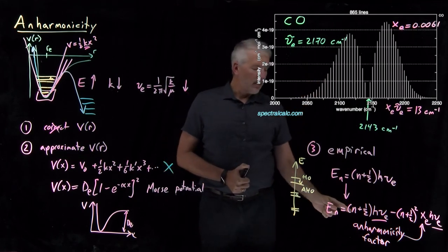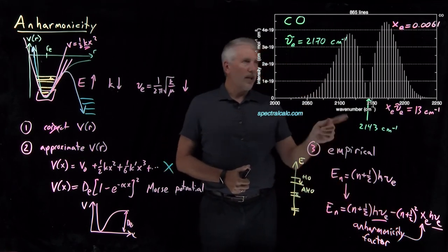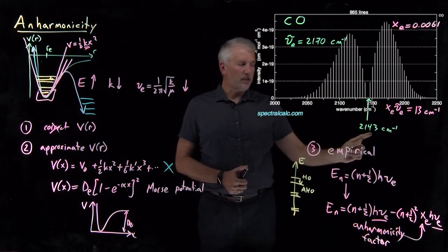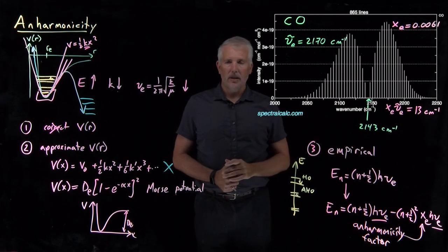If I include various factors of n, that ends up correcting these energies from 2170 down to a few multiples of 10, 2143 wavenumbers.